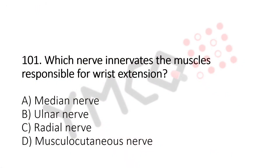Which nerve inhibits the muscle responsible for wrist extension? Option A, median nerve. Option B, ulnar nerve. Option C, radial nerve. Option D, musculocutaneous nerve. And the answer is Option C, radial nerve.